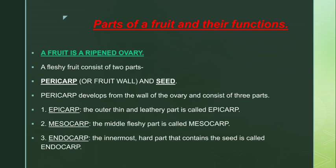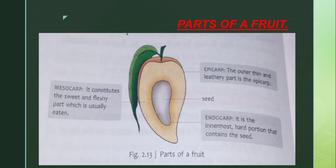Epicarp is the outer thin and leathery part of the fruit. Nowadays it is mango season and we all are fond of eating mangoes. Before eating a mango we wash it and then peel it — the outer covering which is thin and leathery is called epicarp. Usually this covering is discarded, but in some fruits we eat the epicarp also.